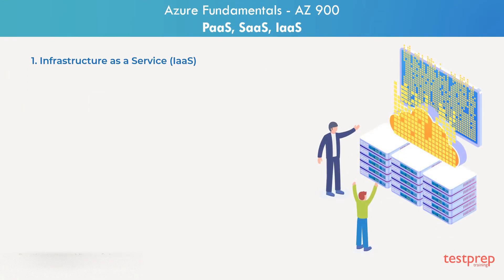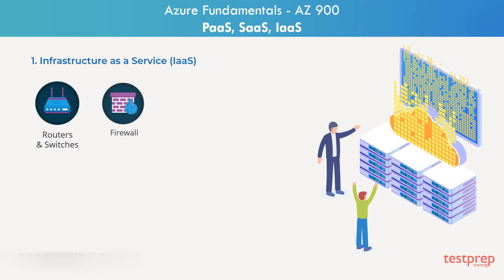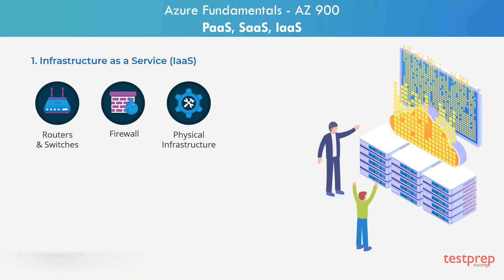Infrastructure as a service. Do you know what it takes to build an infrastructure for an organization? When we think about infrastructure, think about the underlying components of any application. For example, server hardware like routers, switches, firewalls, the underlying cabling, and everything that goes with the physical infrastructure. You need a lot of security monitoring, log access,